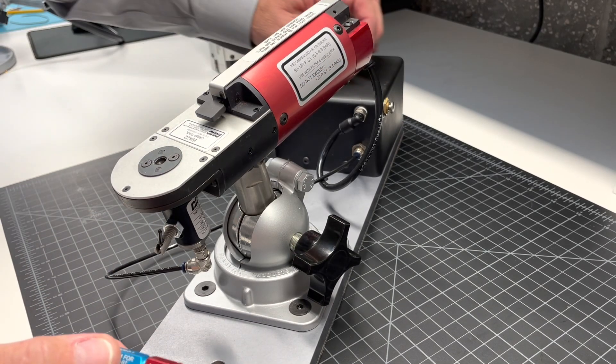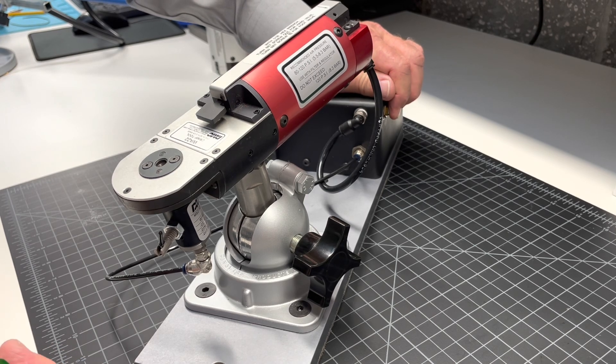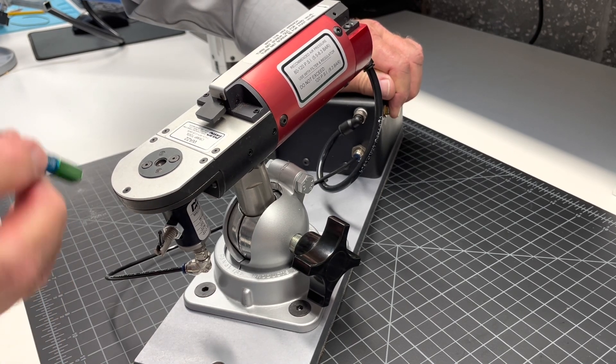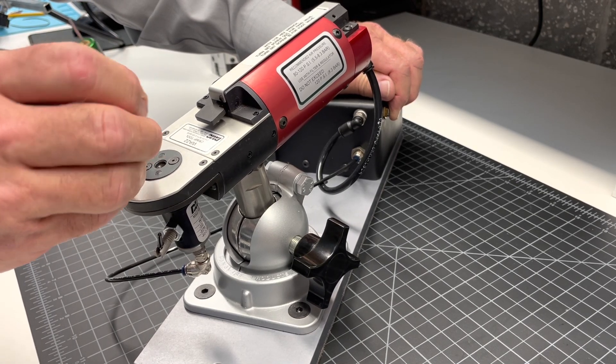Now, using a go-no-go gauge, simply depress the button on the AP module and this will activate the indenters. Now, you can perform your go-no-go test as you normally would with any pneumatic crimp tool.